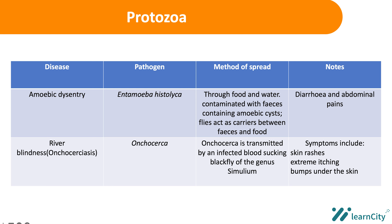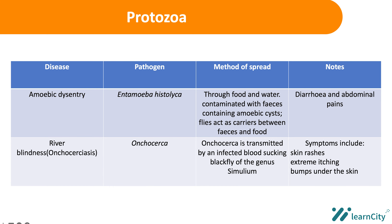Another disease caused by protozoa is river blindness, or onchocerciasis. It is caused by a pathogen called Onchocerca, which is where it gets the name onchocerciasis. It is transmitted by an infected blood-sucking black fly of the genus Simulium. It is called river blindness because this black fly usually breeds around riverine areas and water bodies. Symptoms include skin rashes, extreme itching, and bumps under the skin.